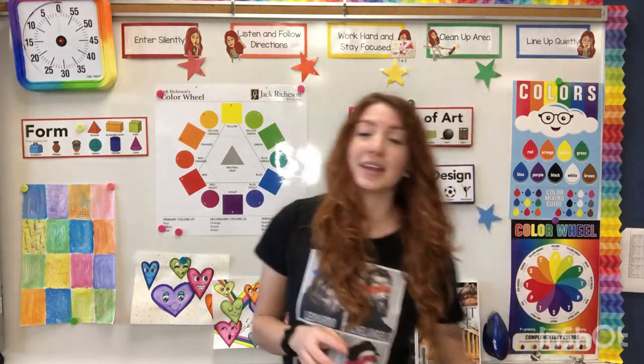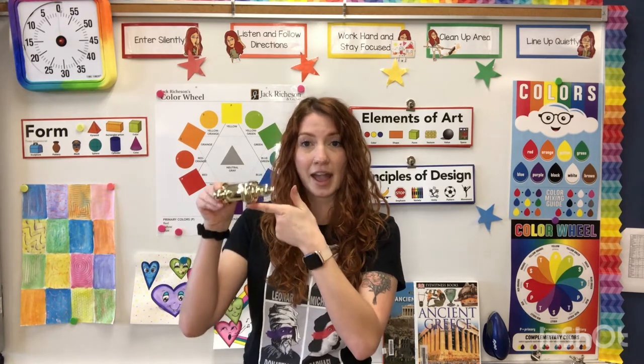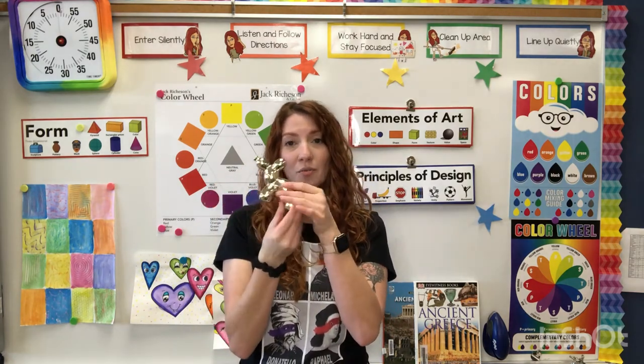An example of a form would be like this sculpture right here. It has length, it has height, and it also has width. And I can see it all the way around.